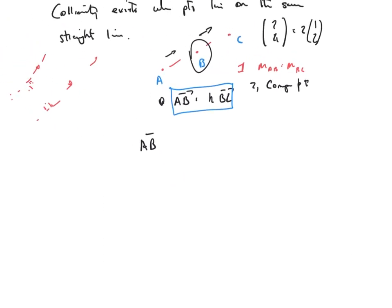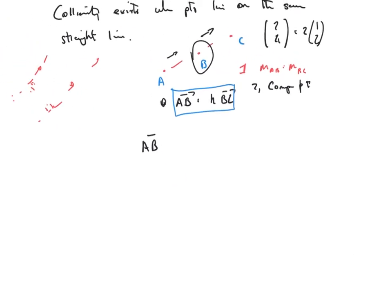Okay, so example 1, let's go for prove that points A(2,4), B(8,6), and C(11,7) are collinear.